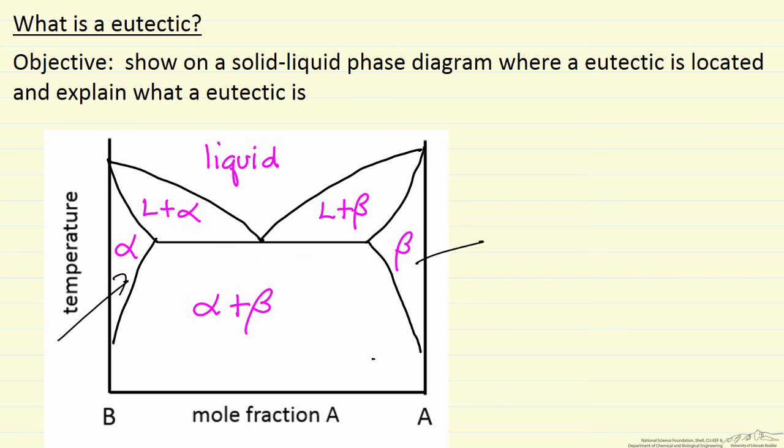Likewise here we have a beta solid which is mostly component A with some B dissolved in it. So the eutectic reaction corresponds to liquid going to form the alpha solid plus the beta solid.